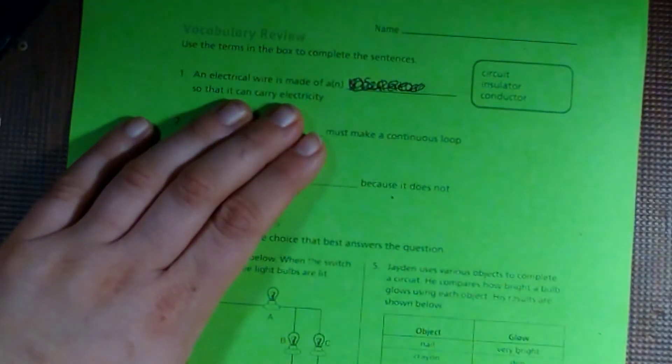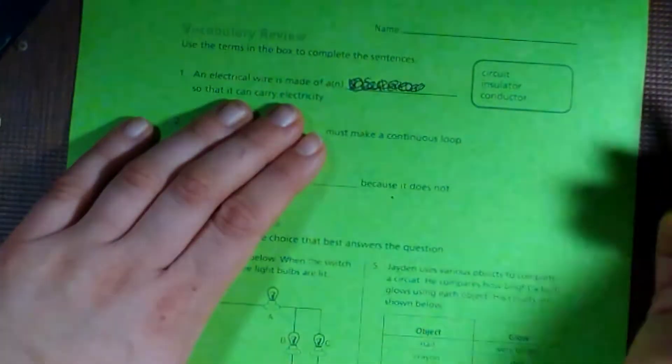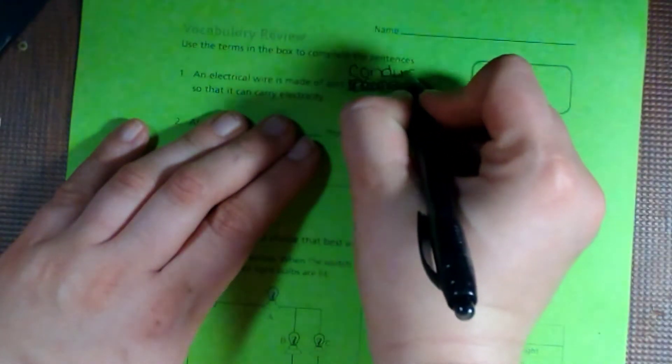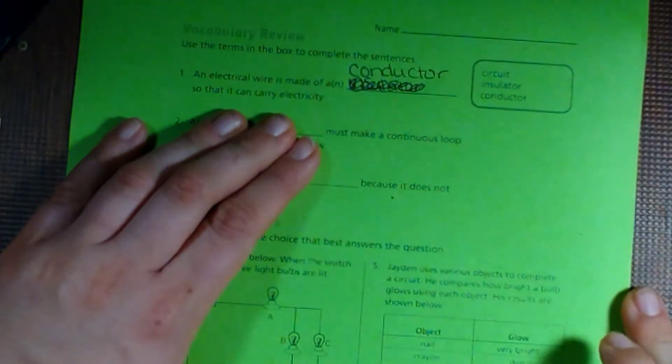All right, this is our review for working with electricity unit 7. An electrical wire is made of a conductor so it could carry electricity.